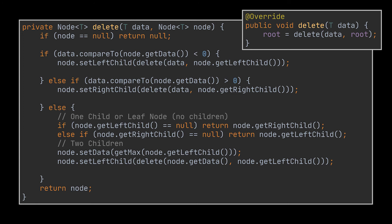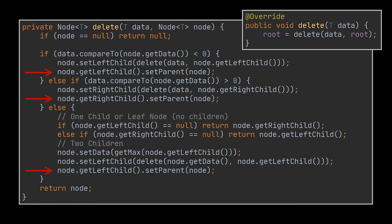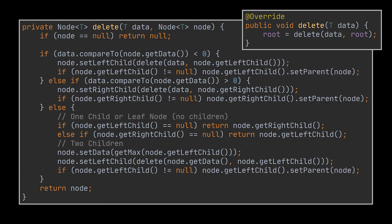Starting from the binary search tree delete implementation, this covers three delete use cases: deleting a leaf node, deleting a node with a single child, and deleting a node with two children. To adapt this for splay trees, we need to account for the parent node reference field — every time we update a child node we also have to update the parent reference. Because we may encounter null nodes during deletion, we must check if a node is null before updating its parent to avoid null pointer exceptions.